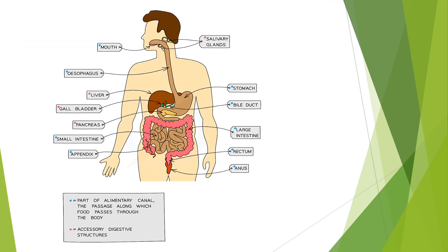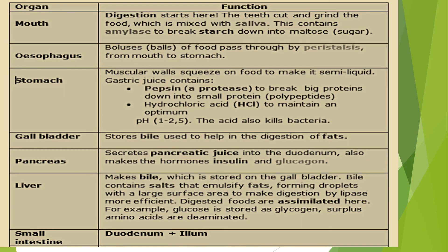We now have a look at the parts of the alimentary canal. You can see the passage along which food passes through the body and also the accessory digestive structures. The next table shows the different organs and their respective functions.